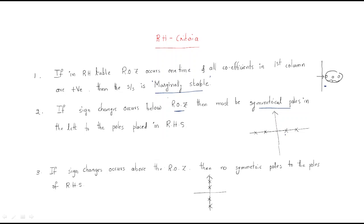The poles arrangement is two poles on this side and two poles on the other side. If any sign changes occur below the ROZ, then the poles are on the right-hand side. If there is no sign change, then the poles are not on the right-hand side — the sign change indicates poles in the right-hand side.